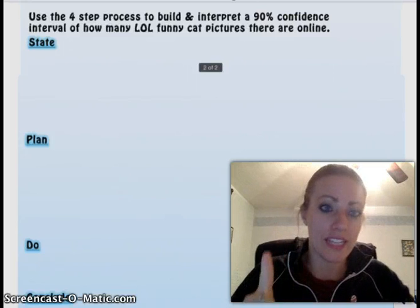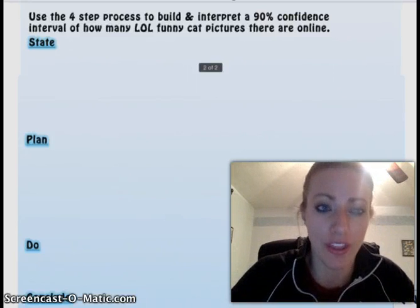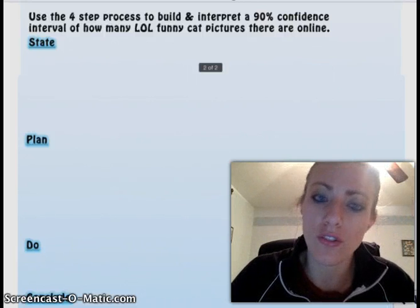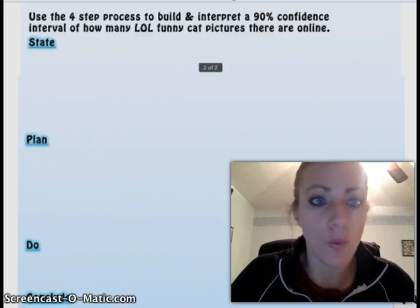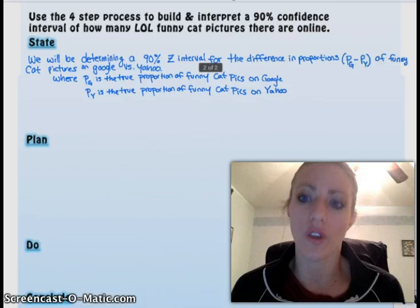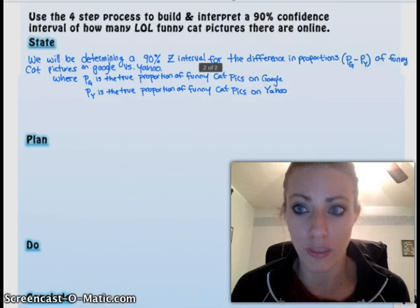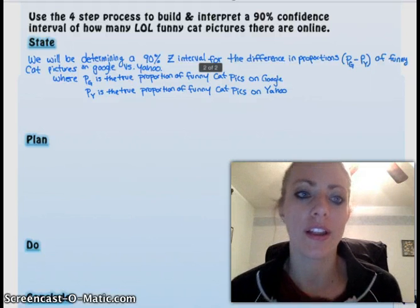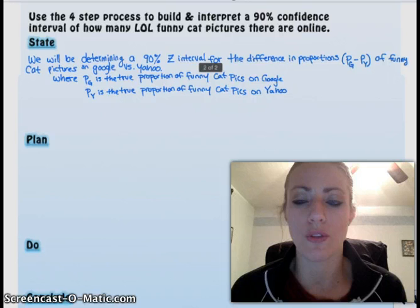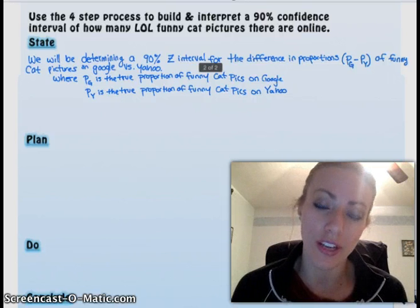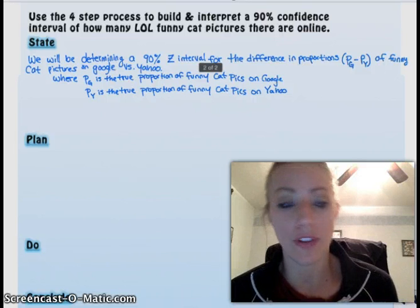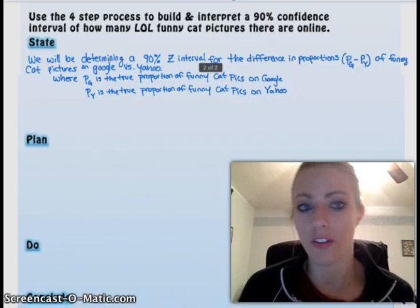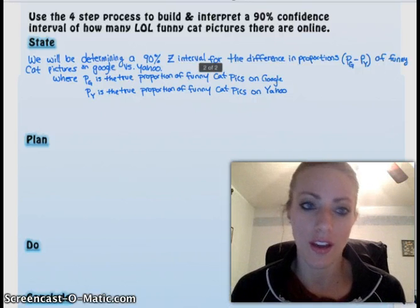So it says use a four-step process to build and interpret a 90% confidence interval on how many funny cat pictures there are online. So state. You got to state your parameters and what they are and what you're going to do. So in this case, we are going to do a 90% Z interval for the difference in proportions, PG minus PY, of funny cat pictures on Google versus Yahoo. Where PG is the true proportion of funny cat pictures on Google and PY is the same, but for Yahoo.